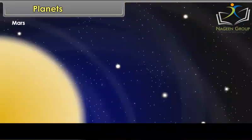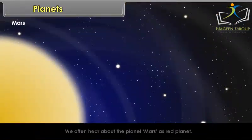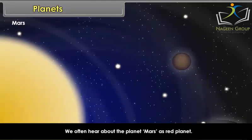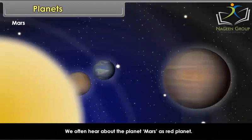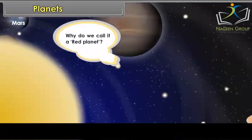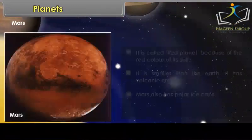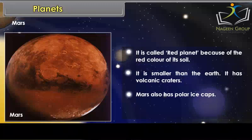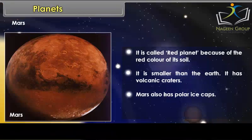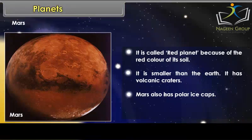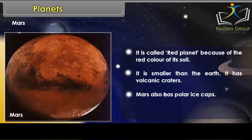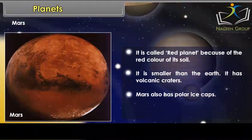Mars is often called the red planet because of the red color of its soil. It is smaller than the Earth. It has volcanic craters and also has polar ice caps.